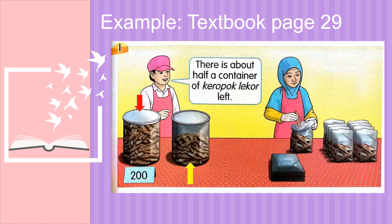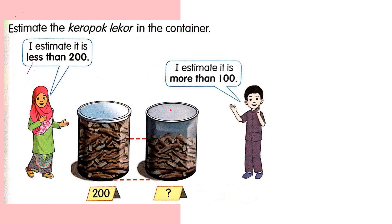The second container is the keropok lekor left after packaging. Selepas dia bungkus semula, yang tinggal — keropok lekor yang tinggal, yang ini. This guy says there is about half a container of keropok lekor left. Dia kata tinggal separuh — half ni separuh daripada bekas tu tinggal. So now we need to estimate the keropok lekor in this container — kita kena jangkakan, estimate, berapa banyak yang tinggal. Pada mula-mulanya ada 200, dan selepas dia packing, tinggal separuh, half of the container.